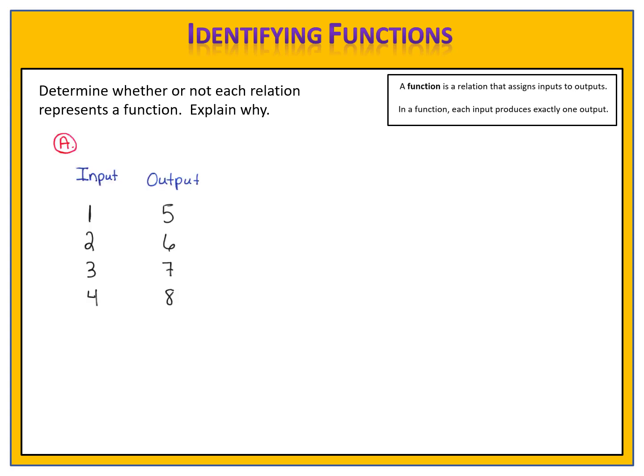Here's Example A. We have the inputs 1, 2, 3, and 4. We have the outputs 5, 6, 7, and 8. Input 1 produces the output of 5, as shown by the arrow. Input 2 produces the output of 7. Input 3 produces the output of 6. Input 4 produces the output of 8. Is this relation a function?